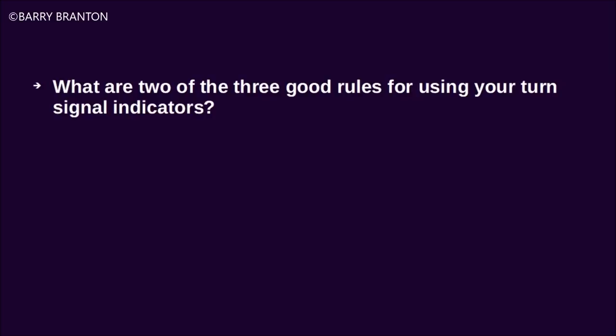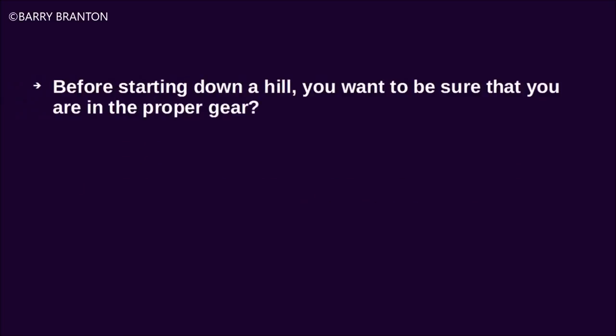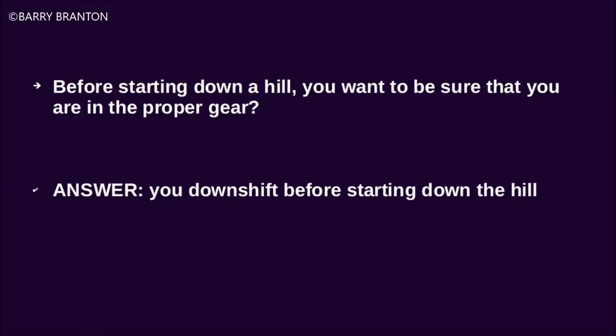What are two of three good rules for using turn signal indicators? Signal early and signal continuously. Before starting down a hill, you want to make sure that you are in the proper gear — you downshift before starting down the hill.